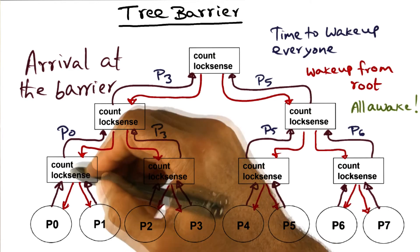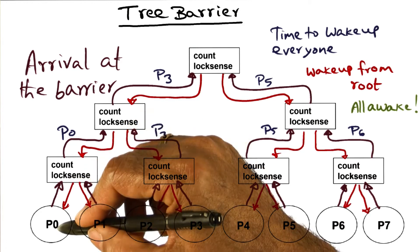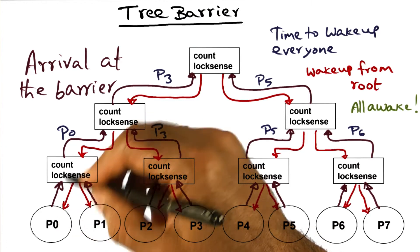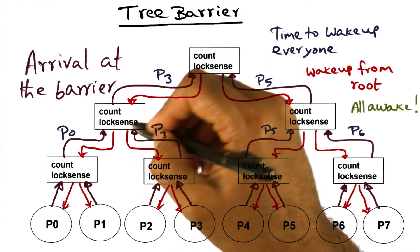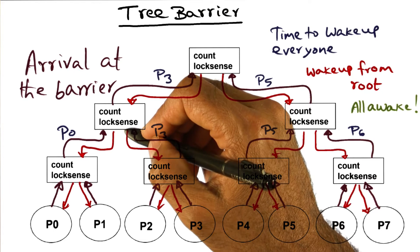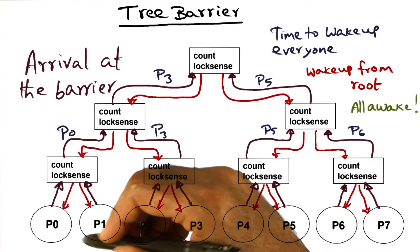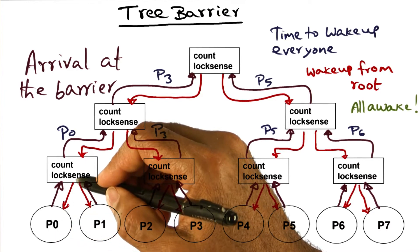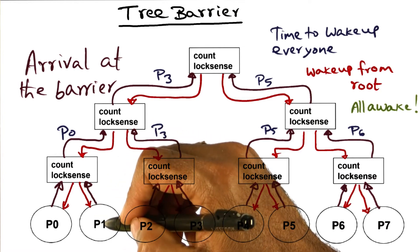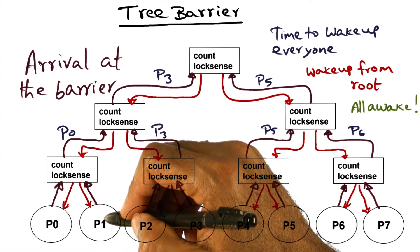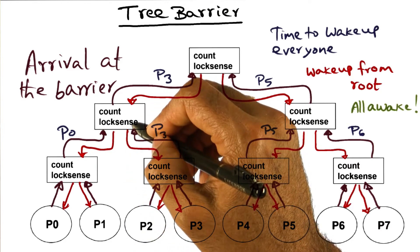When P1 arrived, it decremented count and realized the count is not zero, so it is going to spin there. P0 arrived later and that's why it went up to the next level, spinning on this lock sense variable. In another execution of the same program, it is possible that P0 arrives first — in that case it'll spin on its lock sense variable in that data structure, and P1 will be the second to arrive and move up, spinning on that lock sense flag.